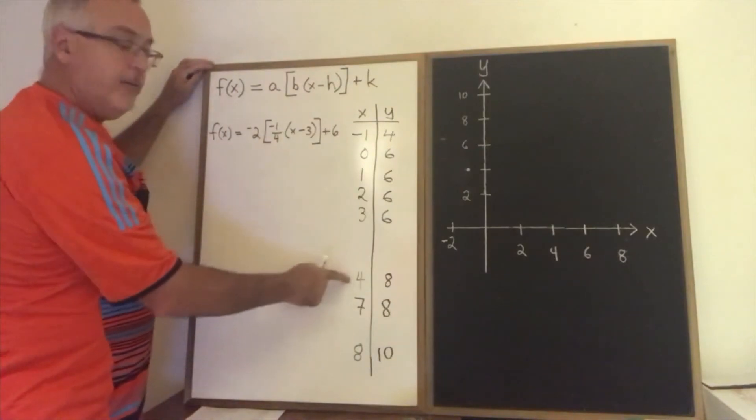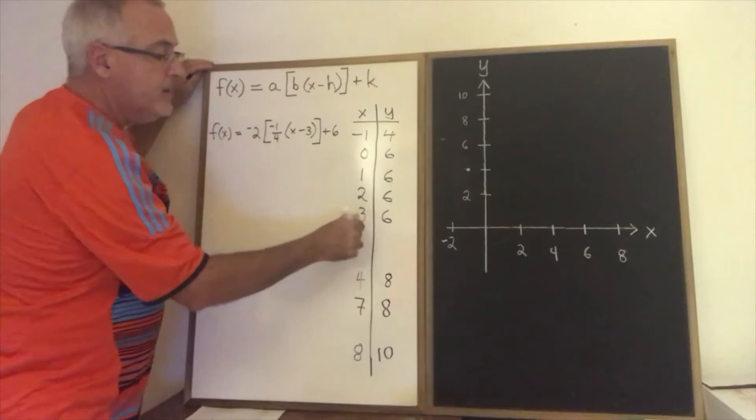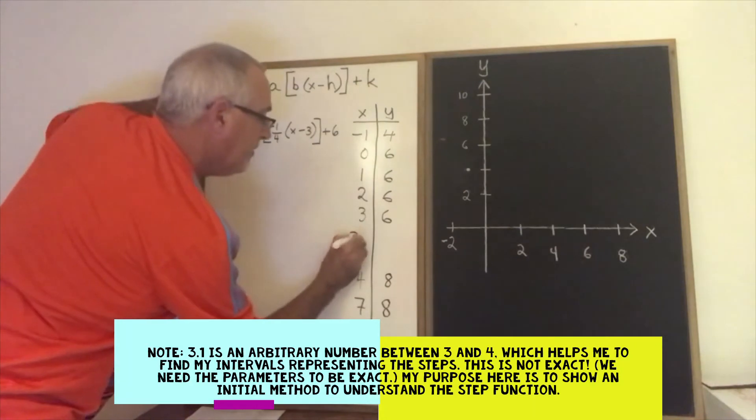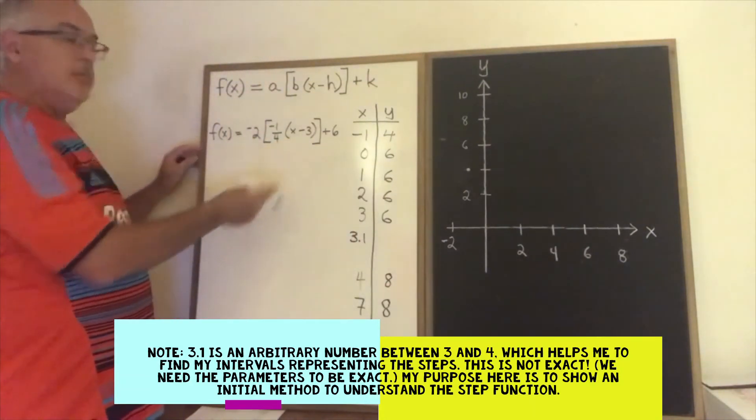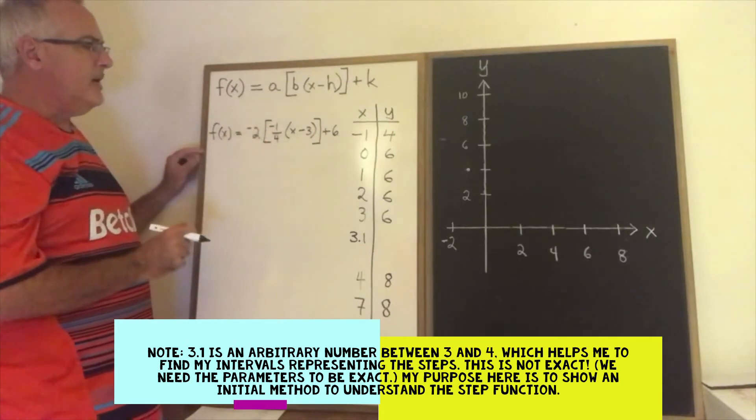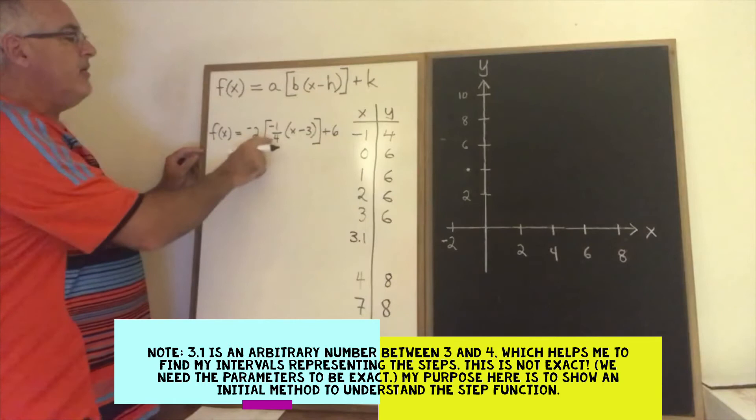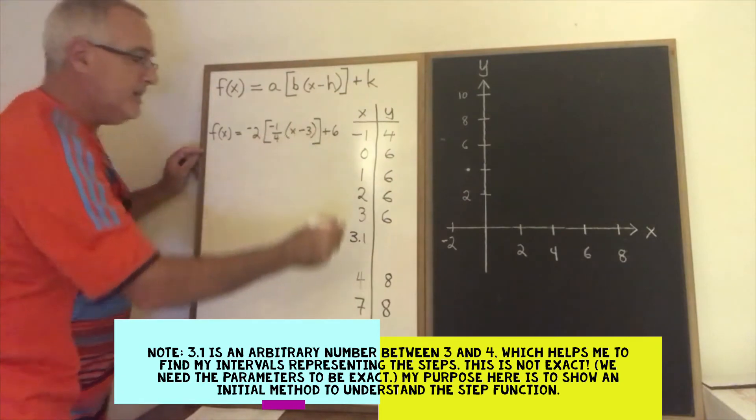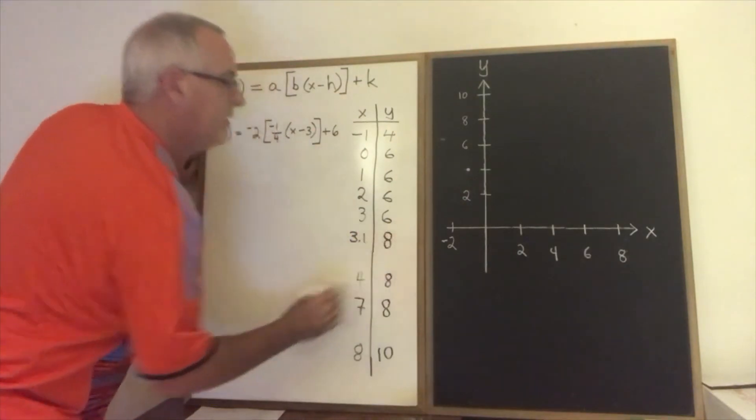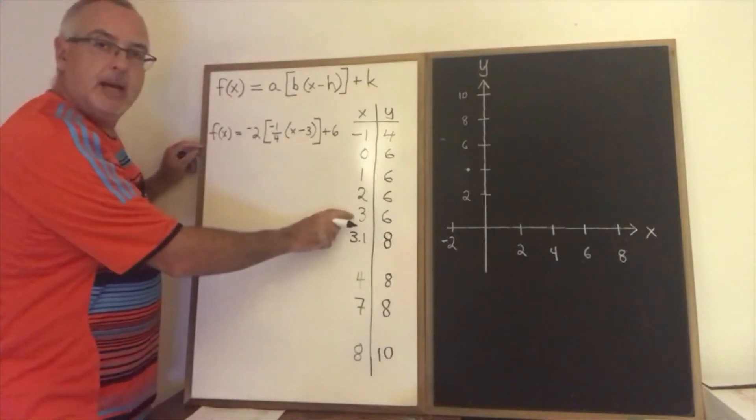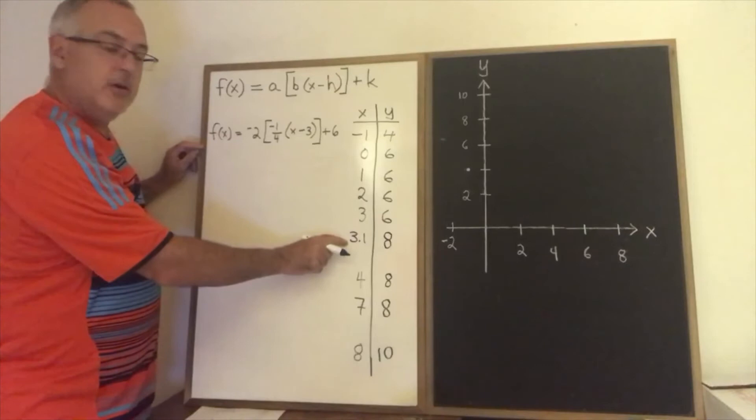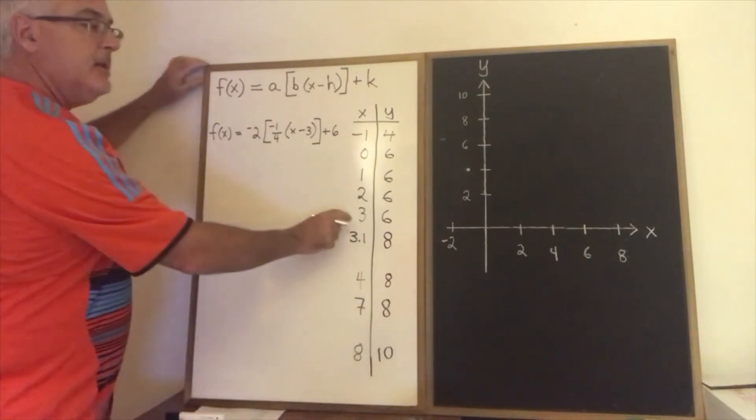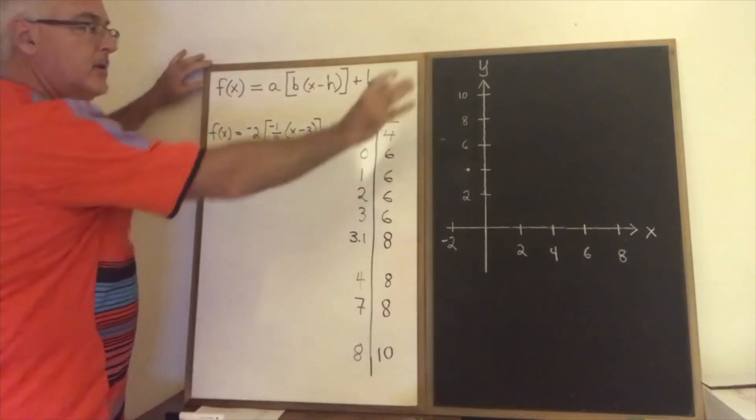I want to know what happens between 3 and 4 because I want to know what happens when the step goes from y equals 6 to y equals 8. So I'm going to use 3.1. 3.1 minus 3 is 0.1 or 1 tenth. 1 tenth times negative 1 quarter is negative 1 fortieth. The greatest integer less than or equal to negative 1 fortieth on the number line is negative 1. Negative 1 times negative 2 is positive 2 plus 6 is 8. So what's happening here as I have deduced that as soon as we pass 3 and get to a number slightly larger than 3 our y has jumped up the step. So that tells me that 3 is the place where I need both an open circle and a closed circle when I graph this.